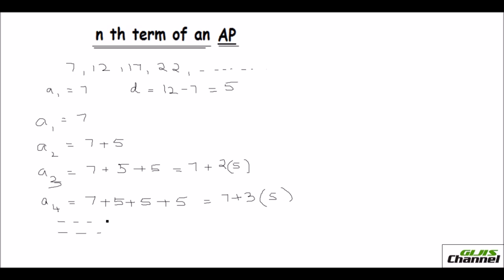Just look at the pattern here. For the first term, the common difference is added 0 times: 7 plus 0 times 5. For the second term, it is 7 plus 1 times 5. For the third term, it is 7 plus 2 times 5. Fourth term, 7 plus 3 times 5. So you see the relationship: the common difference is added one less time than the term number. So for the nth term, it would be 7 plus n minus 1.